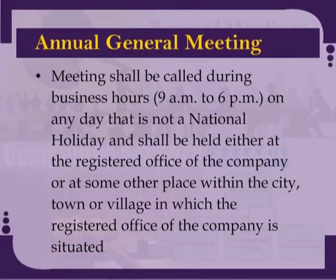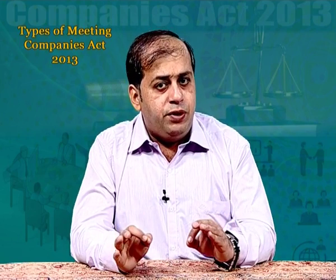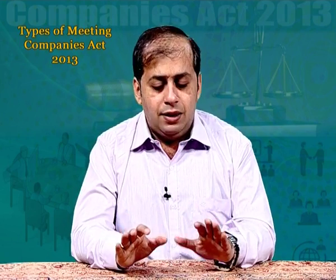Every annual general meeting shall be called during business hours only, that is between 9 A.M. and 6 P.M., on any day that is not a national holiday, and shall be held either at the registered office of the company or at some other place within the same city, town or village in which the registered office of the company is situated. However, the central government may exempt any company from the provisions of this subsection subject to such conditions as it may impose.